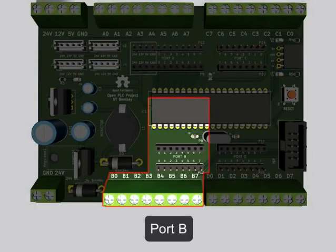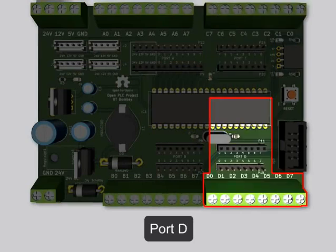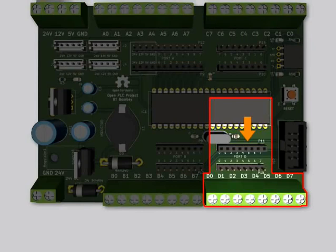Port B can be accessed from pin 0 to 7 through this section as labeled. Similarly, Port C and Port D. We can connect external inputs or outputs to the board in either of three ways: female berg connectors, male berg connectors, or screw terminals.